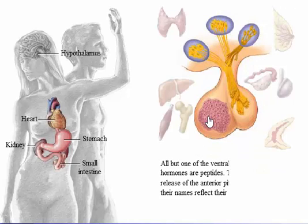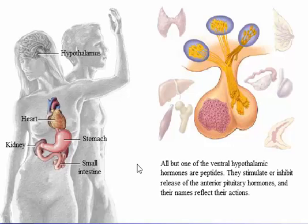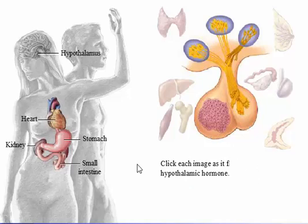All but one of the ventral hypothalamic hormones are peptides. They stimulate or inhibit release of the anterior pituitary hormones, and their names reflect their actions. Click each image as it flashes to review a ventral hypothalamic hormone.